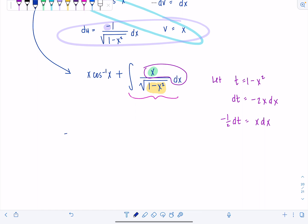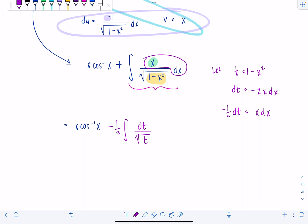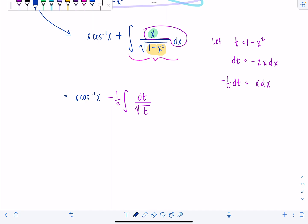So let's go back, make our change of variables. We still have x cosine inverse of x there, and then now I'm going to have minus 1 half integral dt over square root of t. Perfect, perfect, perfect. So let's see now, x cosine inverse of x minus 1 half, let me rewrite this as t raised to the negative 1 half power dt.